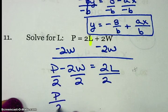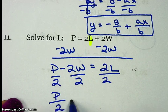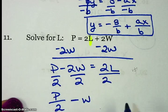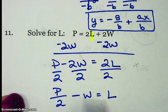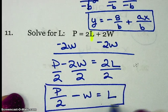So P over 2 stays the same. This cancels. It's minus 1W equals L. And I'm done. I solved for L, so that's it.